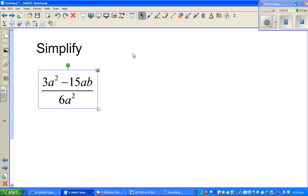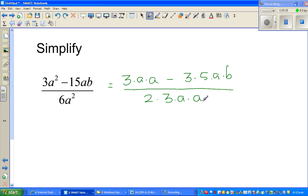Okay, now here again, you have to simplify the numerator. So here I'll write like this: this is 3 dot a dot a minus 3 dot 5 dot a dot b. As I've told you, dot means times. This can be written as 2 dot 3 dot a dot a.